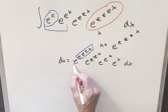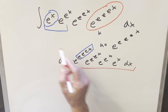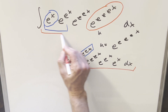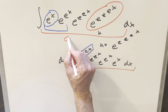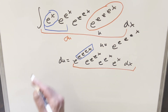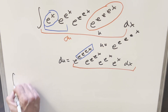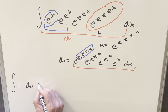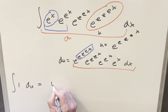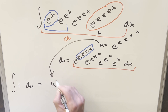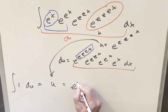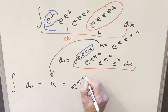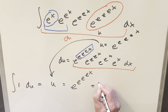The nice thing about that is everything we have right here is actually the whole entire integral. So everything just becomes du. Rewriting this, we just have the integral of du — or 1 du — and integrating that just gives us u. So we back substitute to finish it off, and our final solution is e to the e to the e to the e to the x plus C.